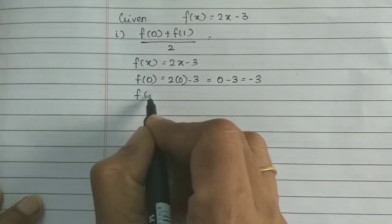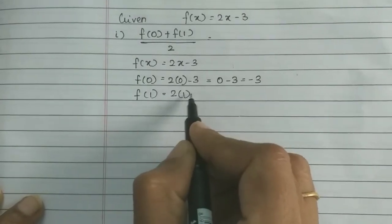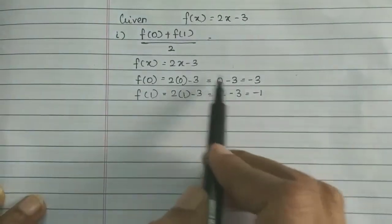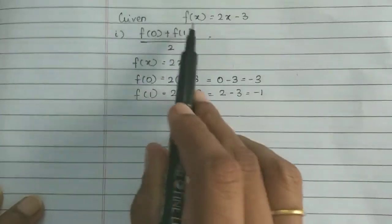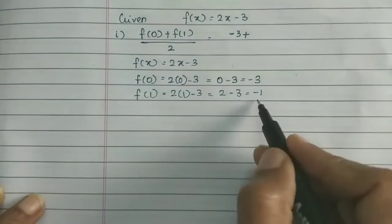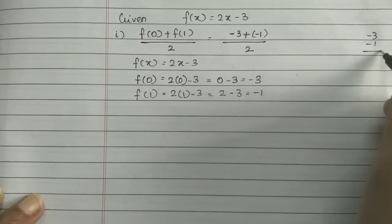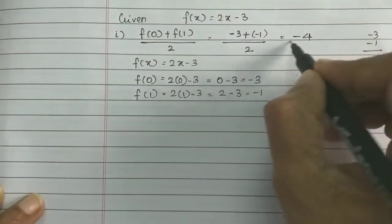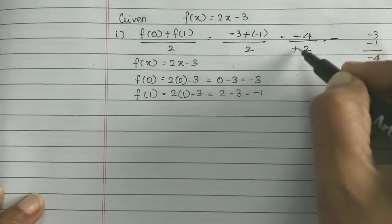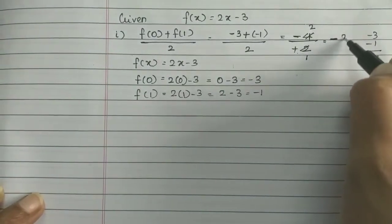Substituting x = 0: f(0) = 2(0) - 3 = -3. Substituting x = 1/2: f(1/2) = 2(1/2) - 3 = 1 - 3 = -2... wait, so f(0) + f(1/2) = -3 + (-1) = -4. Then -4 divided by 2: since the symbols are different, minus divided by plus gives minus, so the result is -2.